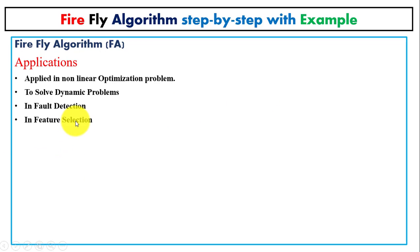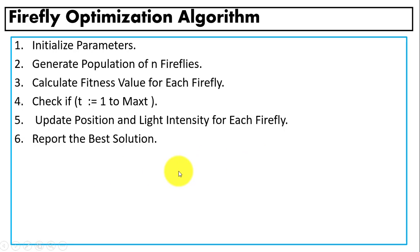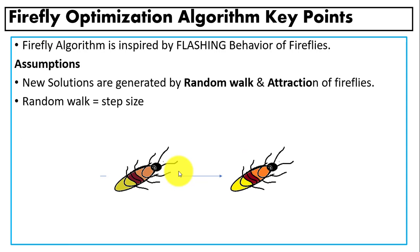This algorithm has several applications: feature selection, detection tasks, solving dynamic problems, and solving non-linear optimization problems. To summarize, in the Firefly Algorithm we initialize parameters, generate the population, compute the light intensity value, update positions, compare values, and generate the best solution. If you have any questions, comment below — links are in the description. Thanks for watching.